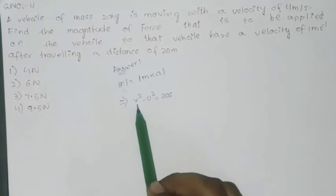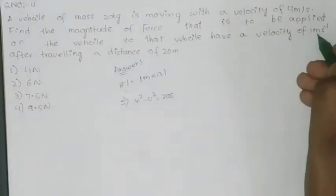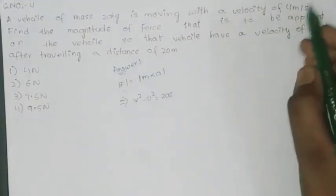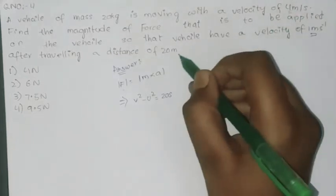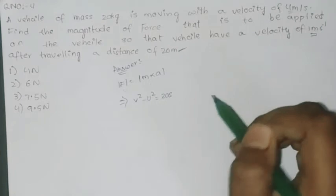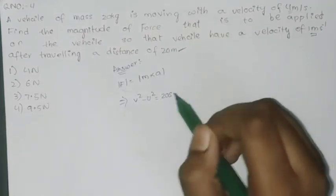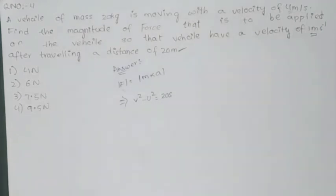Because final velocity is given as 1 m per second, initial velocity is given as 4 m per second, and distance given means s is given 20 meters. Then what is the acceleration here?